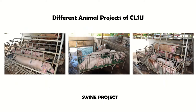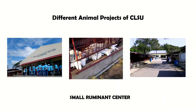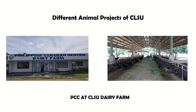Next, we have the broiler project. We have a two-tunnel ventilation broiler house with a total capacity of 50,000 heads of broilers. This is under contract growing. Next is the swine project. Unfortunately, this project is not producing pigs at the moment because of the ASF threat, or the African Swine Fever. Next is the Small Ruminant Center or the SRC. This is a research project, but they are also producing milk for selling and providing technical assistance to goat raisers. Next is the PCC at CLSU dairy farm for the production and processing of carabao milk and other dairy products.